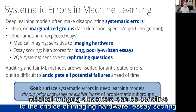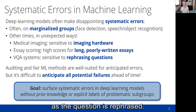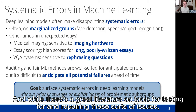Essay scoring systems sometimes give high scores to poorly written essays just because they're long. And visual question answering systems can work well on some questions, but fail as soon as the question is rephrased. And while there's a great literature on tools for testing for and repairing these sorts of issues,